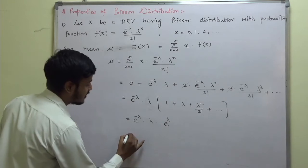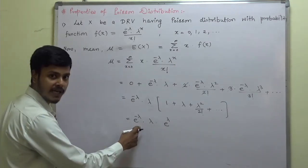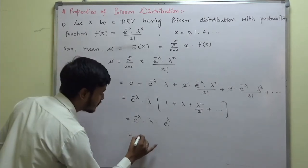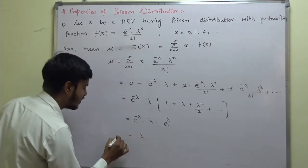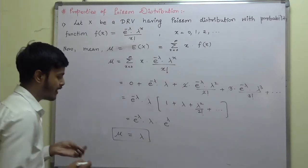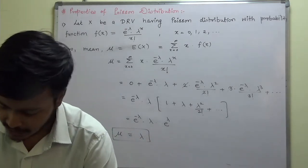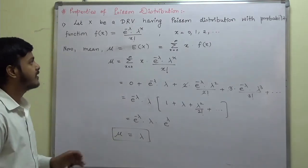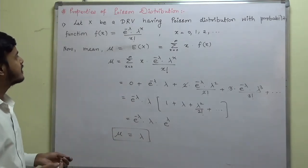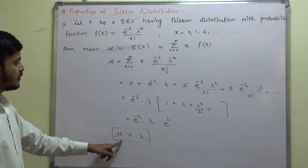Applying the law of indices, e^(−λ) · e^λ = e^0 = 1. So we remain with λ. Therefore, we have found that the mean of the Poisson distribution is equal to λ.